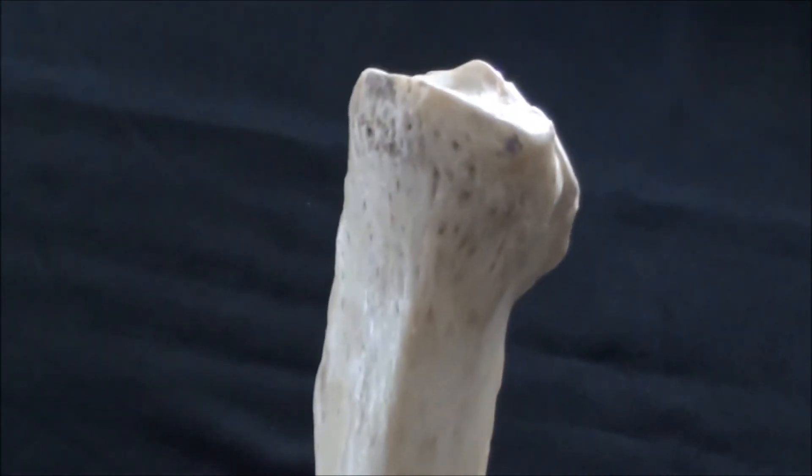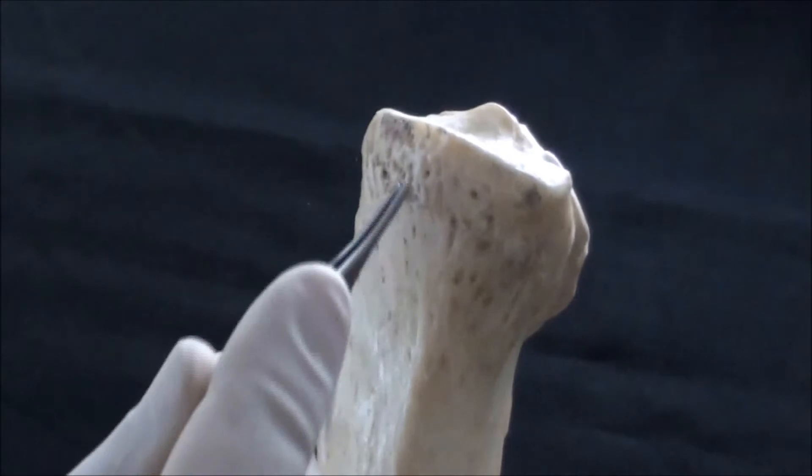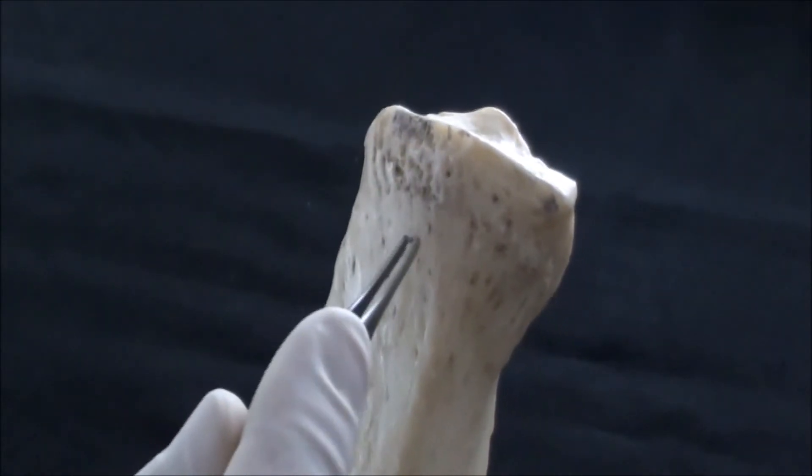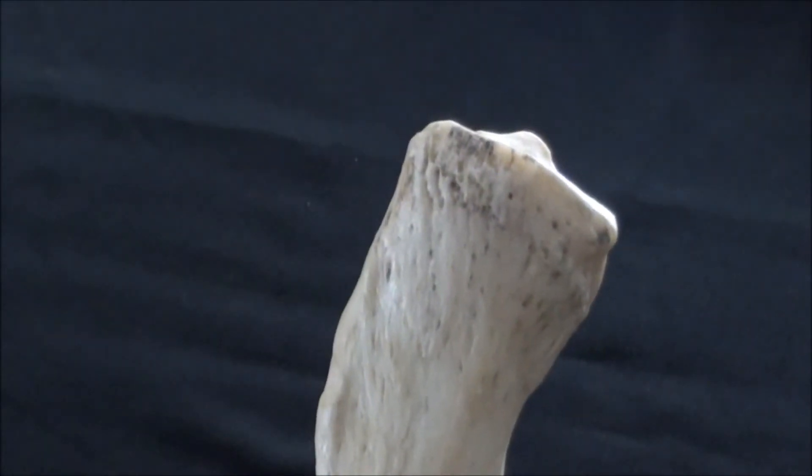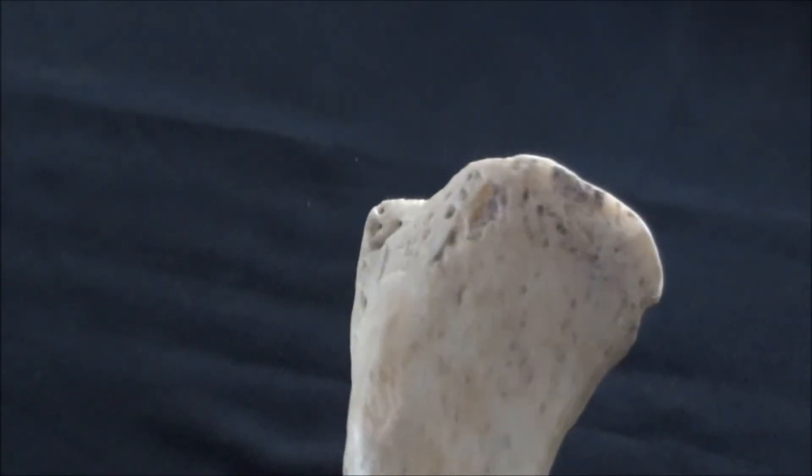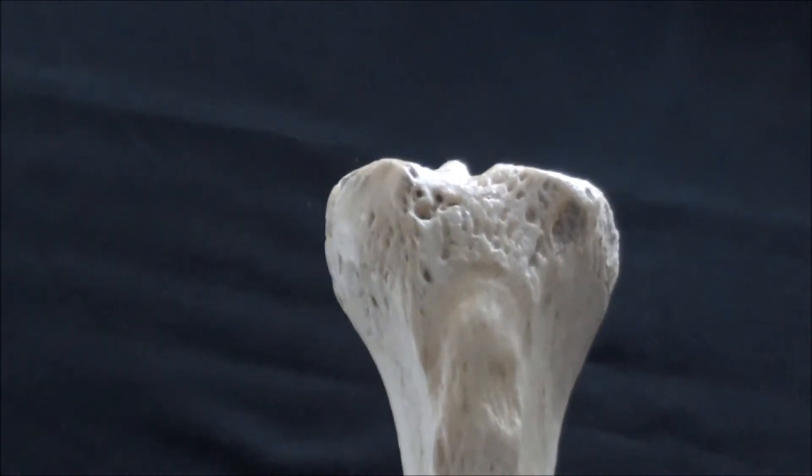As we continue rotating the bone, we're now seeing from the medial direction the medial condyle, multiple openings again to allow passage for smaller blood vessels into the proximal part of the tibia. By completing the full revolution, we're back to the anterior side where we confirm once again the anteriorly located tibial tuberosity.